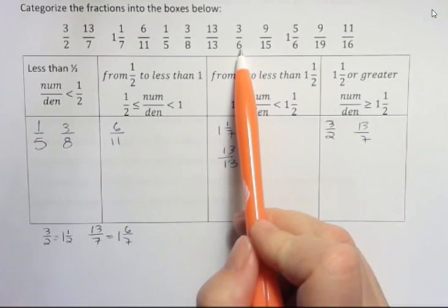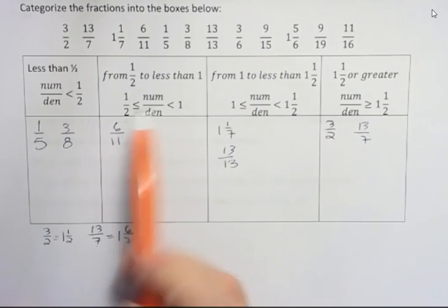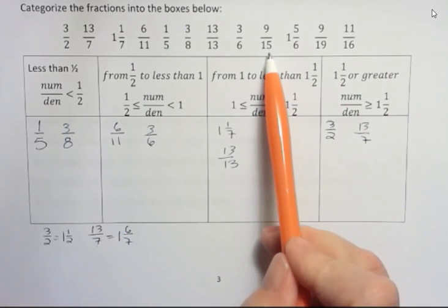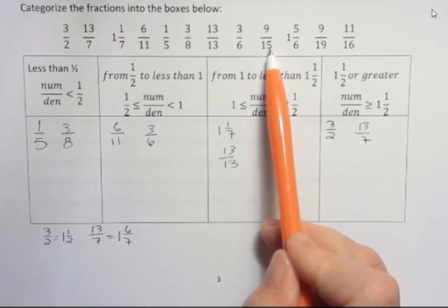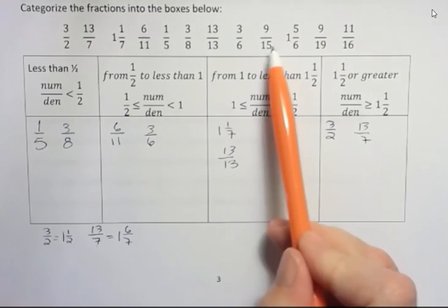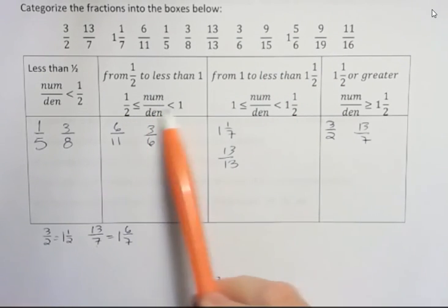3 over 6. 3 is half of 6. This is exactly 1 half. So exactly 1 half would go into this box. 9 fifteenths. What's half of 15? Half of 15 is 7.5 and 9 is greater than that. But definitely this is less than 1. So it goes in here between 1 half and 1.